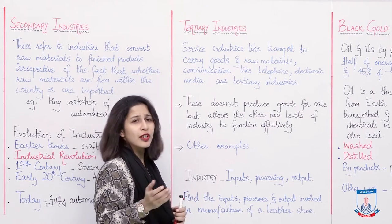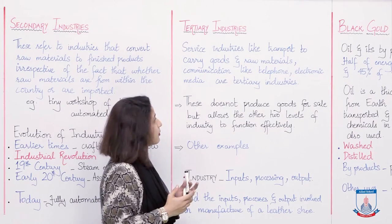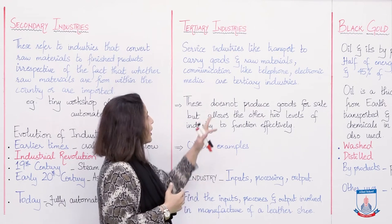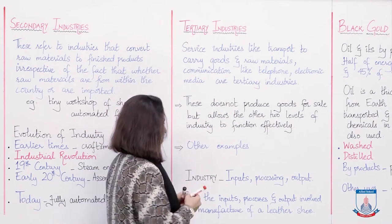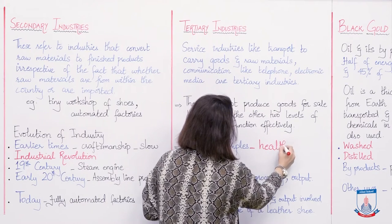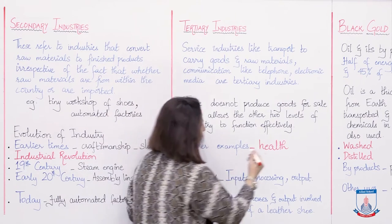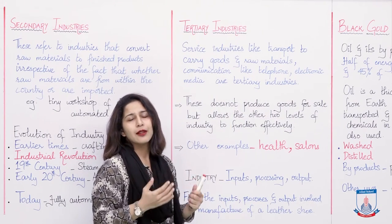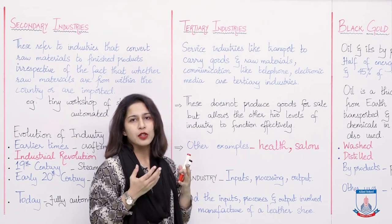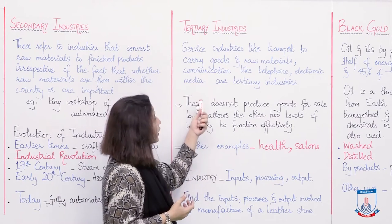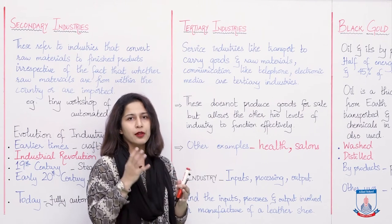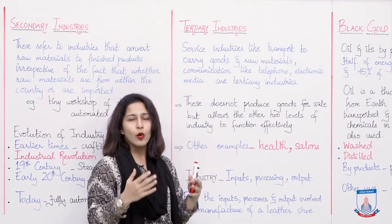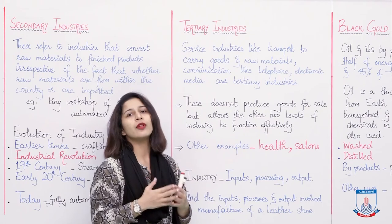Tertiary industries — service industries like transport, to carry goods and raw materials; communication like telephone and electronic media. Tertiary industries are all those industries that provide services to us — not just transport and communication, but also the health sector, hospitals, saloons where we get haircuts and facials. These are all service-providing industries. Tertiary industries don't make goods — they only connect secondary and primary industries, like we discussed in the earlier examples of the notebook and the leather shoe. In all these processes, all three industries come and are used together.